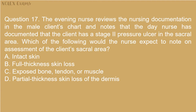Question 17. The evening nurse reviews the nursing documentation in the male client's chart and notes that the day nurse has documented that the client has a stage 2 pressure ulcer in the sacral area. Which of the following would the nurse expect to note on assessment of the client's sacral area? A. Intact skin. B. Full thickness skin loss. C. Exposed bone, tendon, or muscle. D. Partial thickness skin loss of the dermis.